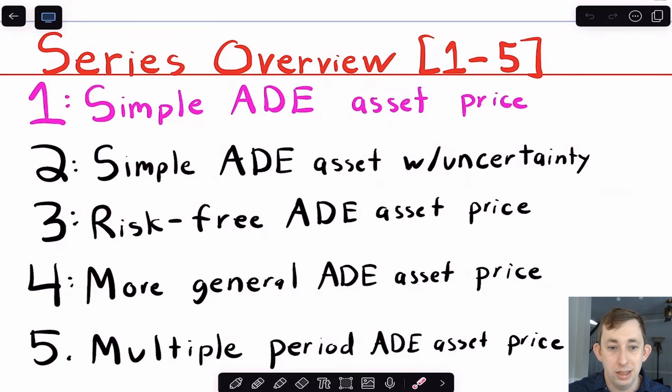What I foresee happening is starting out today with just a very simple ADE asset price where you're given a certain amount of goods in every period, then adding uncertainty to that, talking about a risk-free Arrow-Debreu asset given uncertainty, talking about a more general ADE asset price, and also talking about multiple periods Arrow-Debreu asset pricing. This would just be the first five videos.